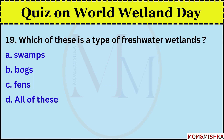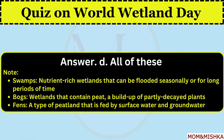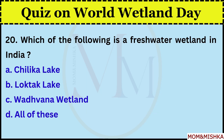Which of these is a type of freshwater wetland? All of these, option D. Swamps are nutrient-rich wetlands that can be flooded seasonally or for long periods of time. Bogs are wetlands that contain peat, a build-up of partly decayed plants. Fens are a type of peatland that is fed by surface water and groundwater.